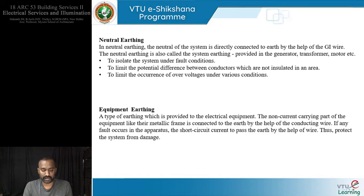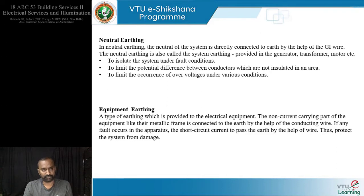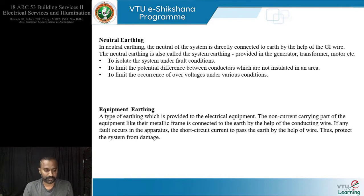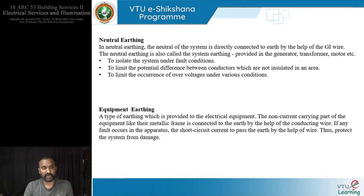Equipment earthing protects the equipment because if there is a leakage of current to another conductor — for example, a metal case, which many appliances have — there must be a means of guiding those electrons back to earth. By connecting the non-current-carrying part of the equipment to earth with a connecting wire, we protect both the equipment and anyone who comes into contact with it. Neutral earthing directly connects the neutral of the system or circuit to earth, so that any electrons wandering in the circuit due to leakage are safely handled.